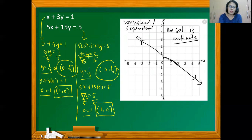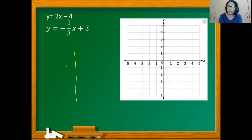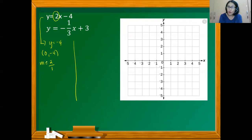Let's work on the fourth example. Since both equations are expressed in slope-intercept form, it's easier to sketch the graph using the y-intercept and slope. For the first equation, the y-intercept is negative 4, giving one point at (0, −4). The slope m equals 2, which is the same as 2 over 1, and we use this ratio to identify another point.